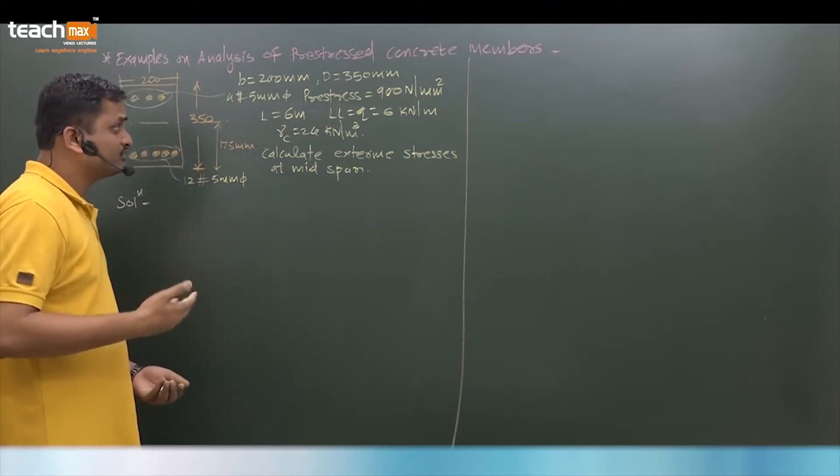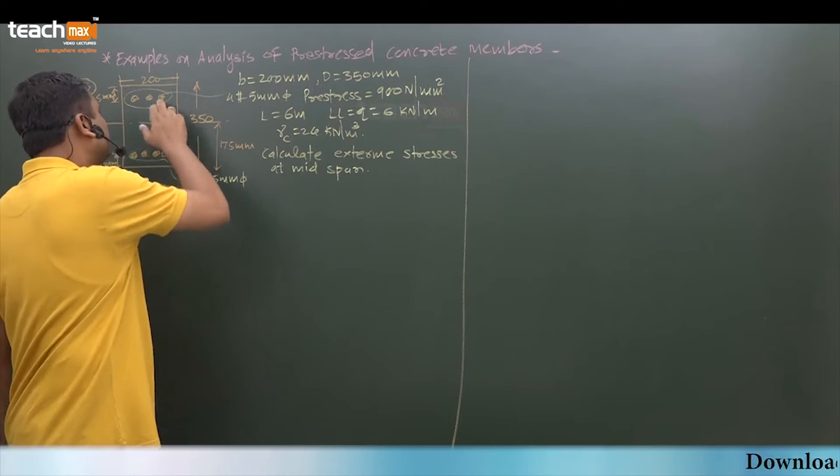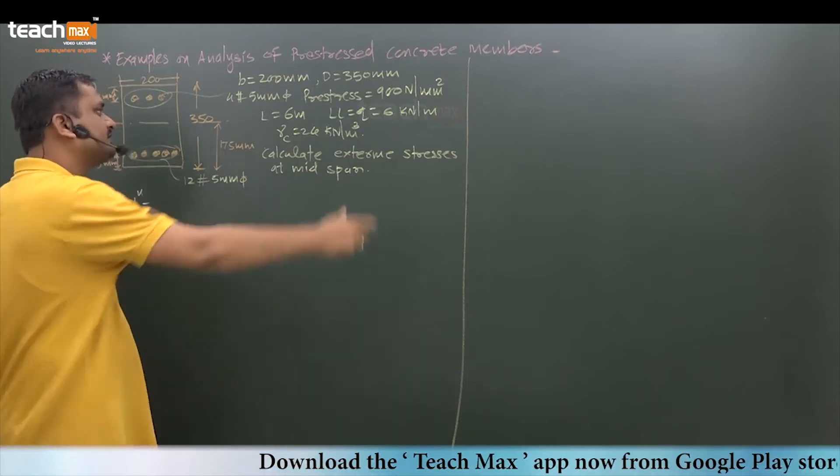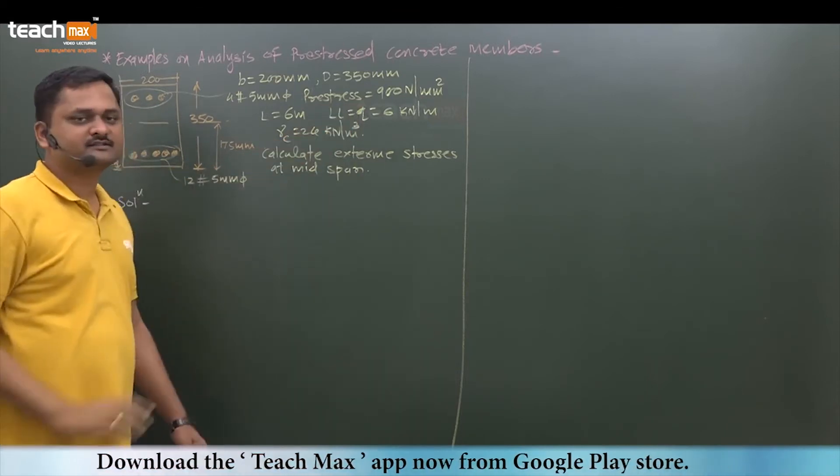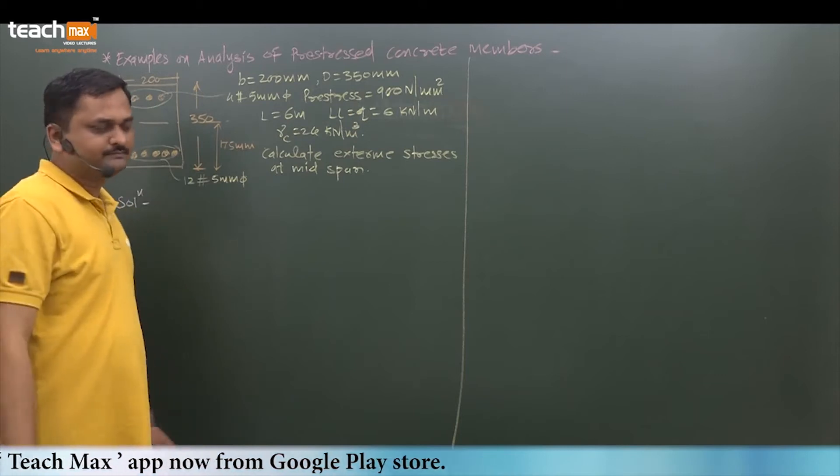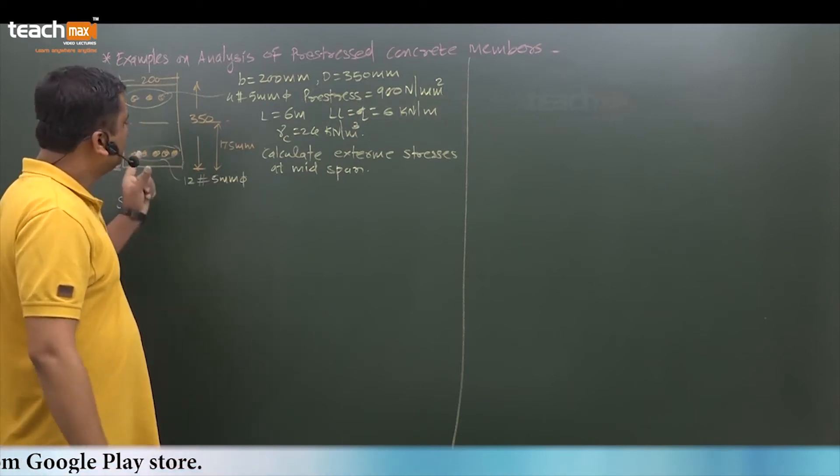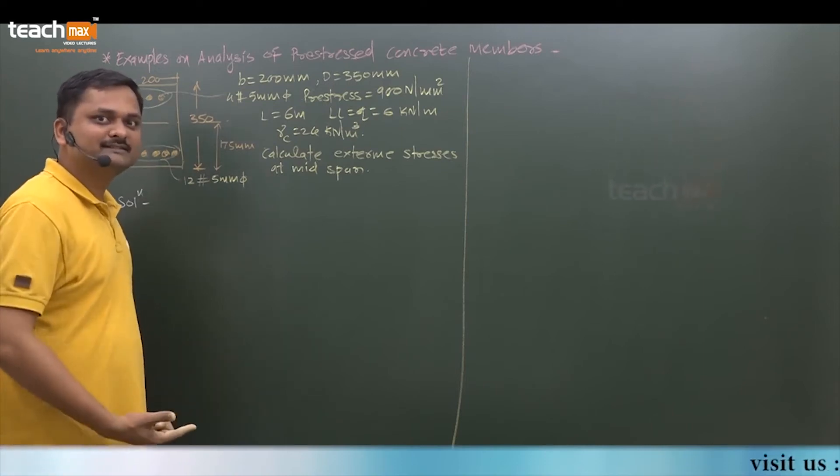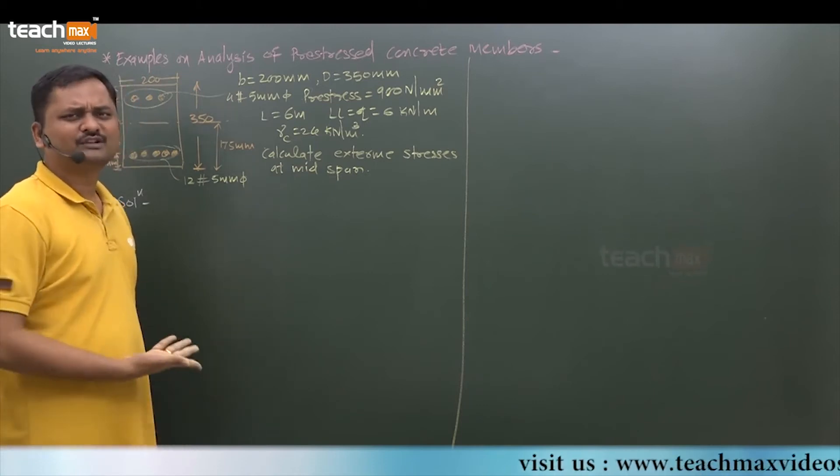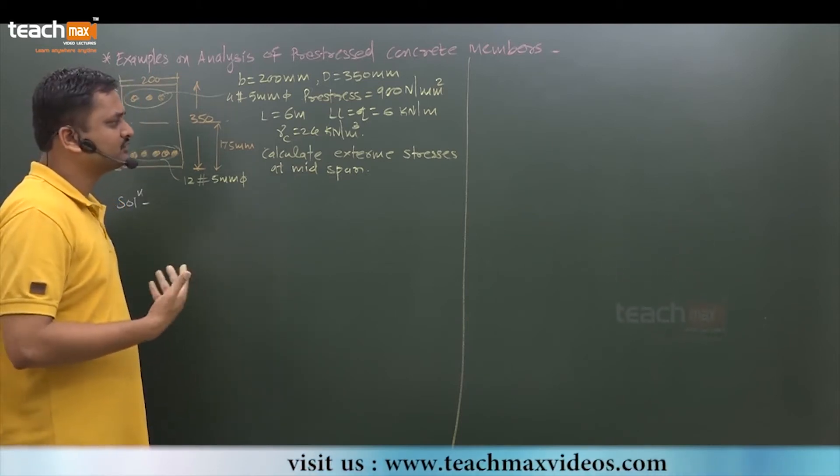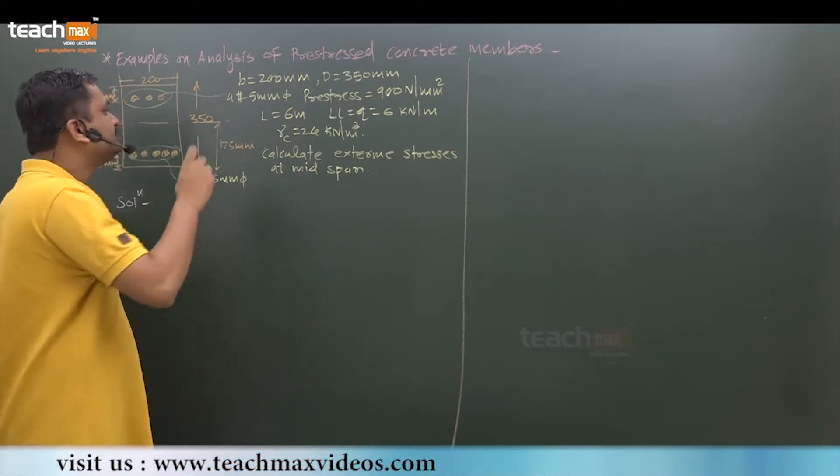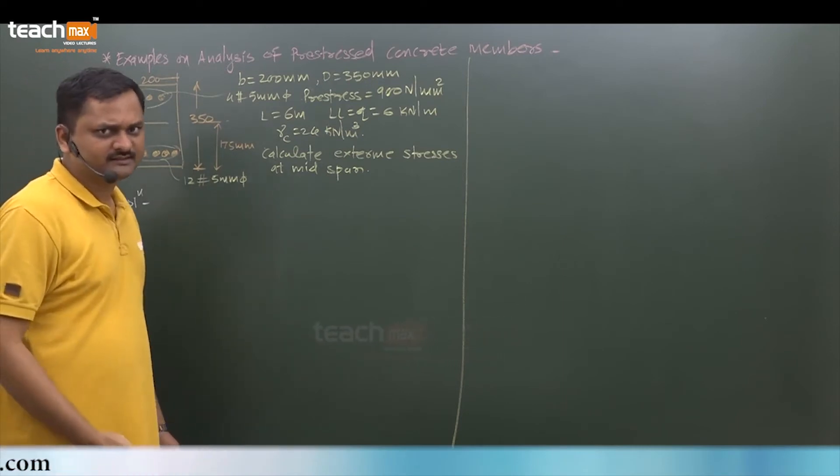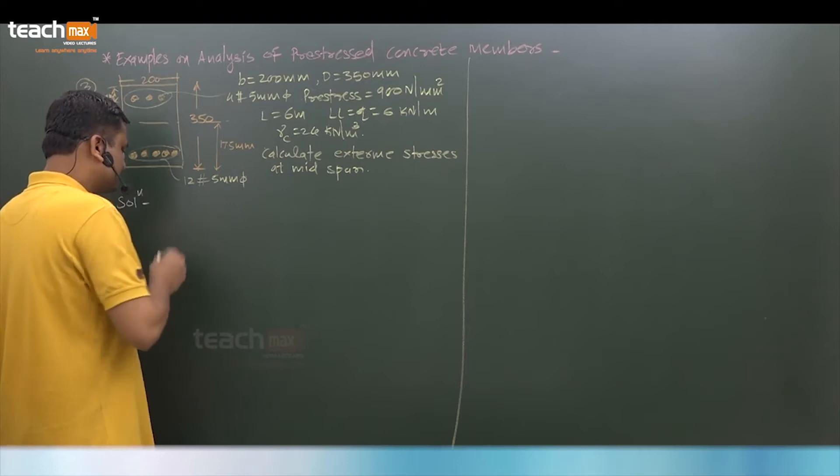The job is to find out the pre-stressing force because of these wires and this pre-stress. Pre-stress is given for the whole cross section, and the number of wires and size of wire is given. So we need to find out pre-stressing force and its eccentricity. Once we know that, then you can solve the example easily.